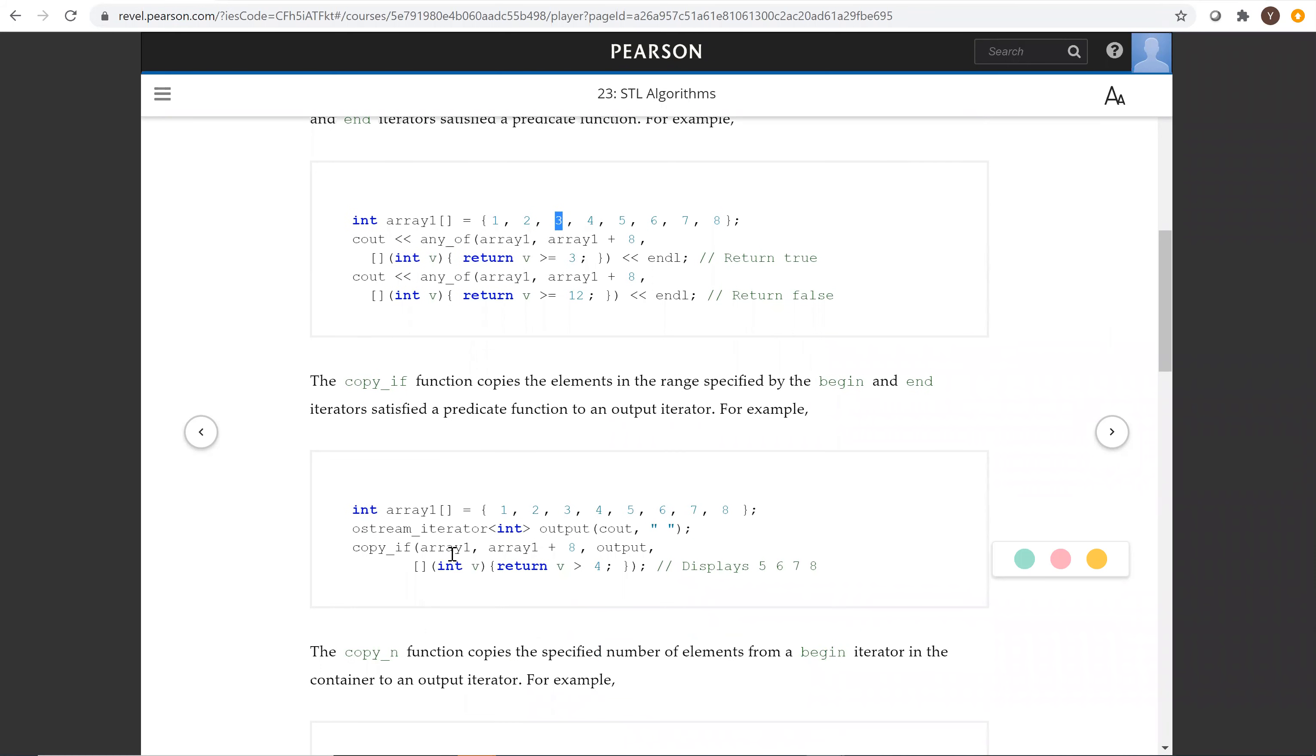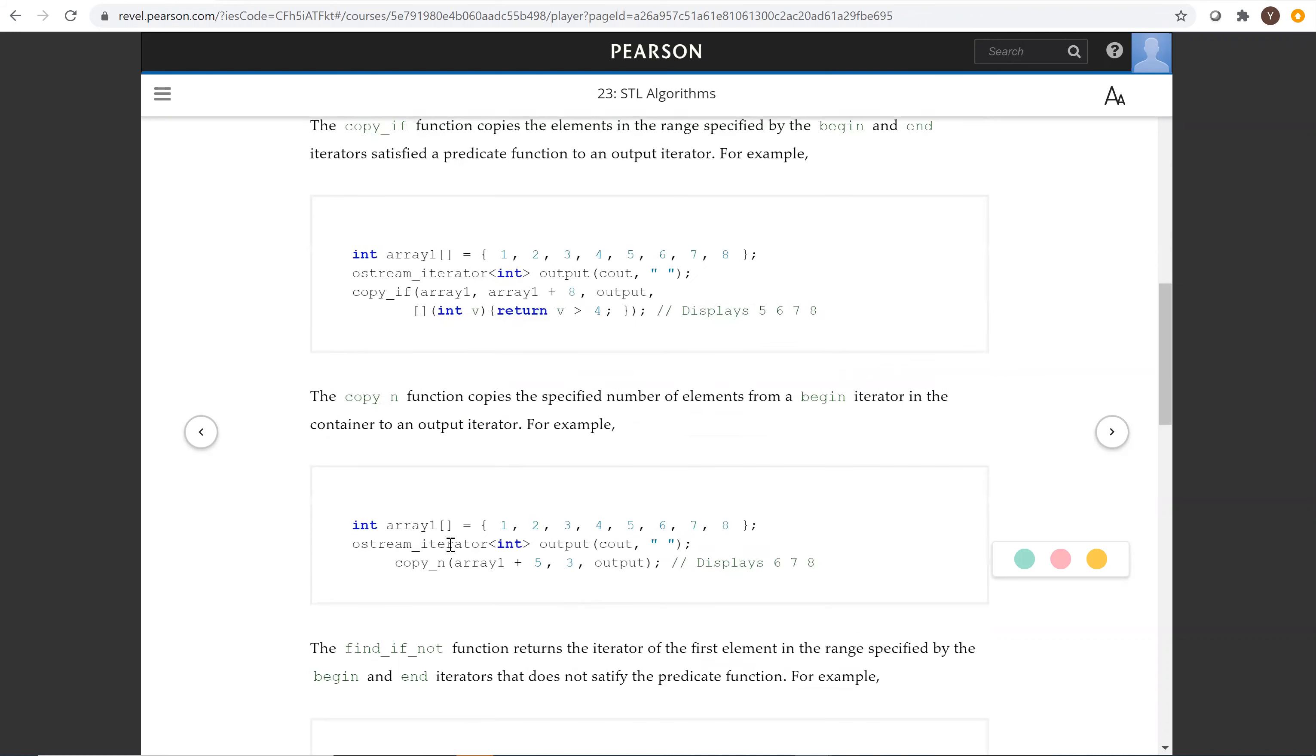CopyIf will copy elements where the condition is true, so we only copy the ones where this condition is satisfied. CopyN will copy N elements, so this copies three elements starting from this sequence at this location to the output.